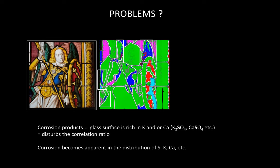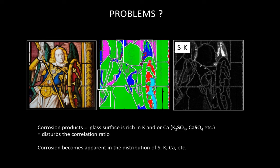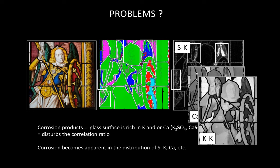Are there any problems with this technique? Yes, there are. You might have noticed that a number of glass pieces contain several colors in the image — these are pieces affected by glass corrosion. As the surface of the glass is enriched with potassium and calcium in the crusts, the correlation will be disrupted. The presence of corrosion also shows up in the distribution images, particularly in the sulfur, calcium, and potassium images. This means the technique will not work well for other glass panels heavily affected by glass corrosion.